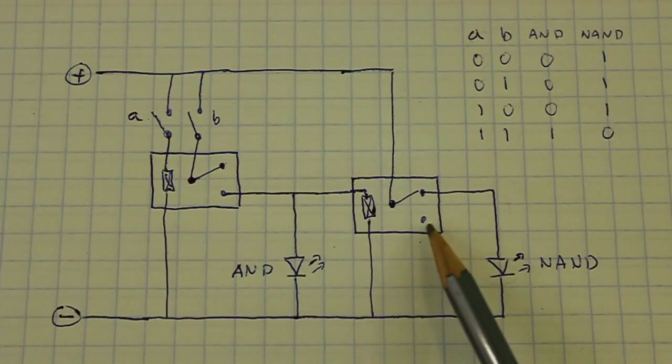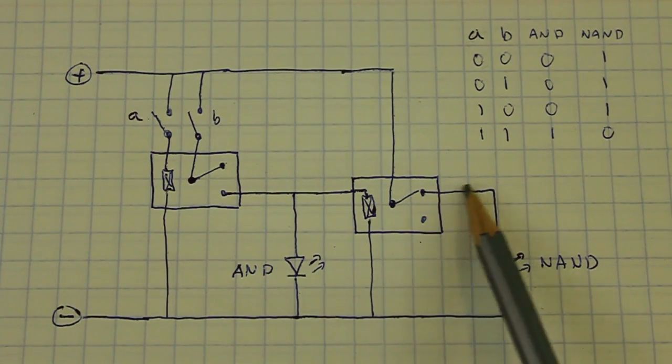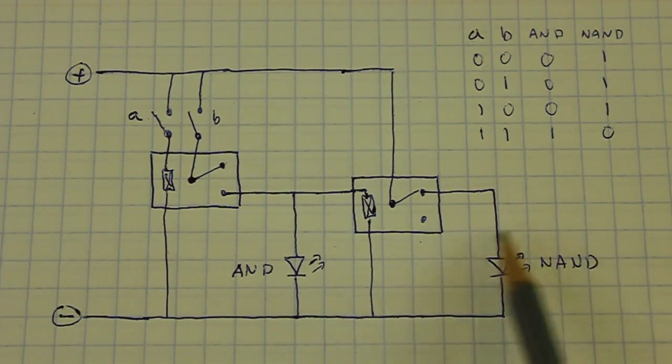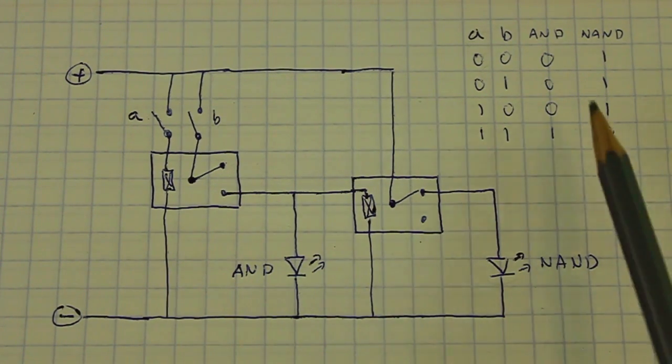And the current that is flowing here also energizes the coil of the second relay. This switch moves to this position. And now, no current can flow through the other LED. This is now OFF. 0.